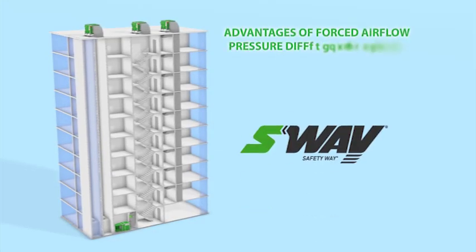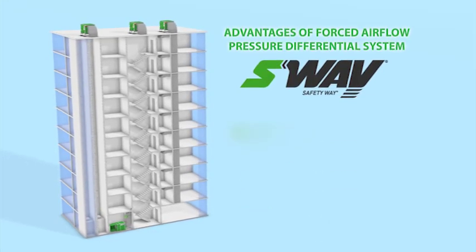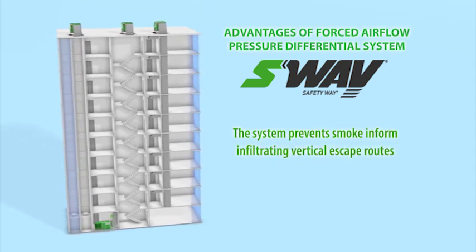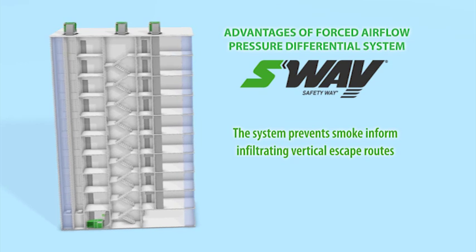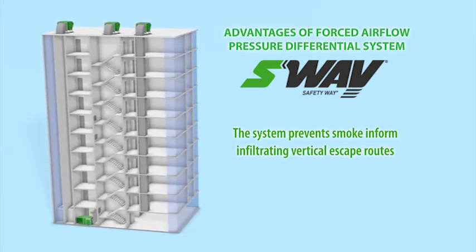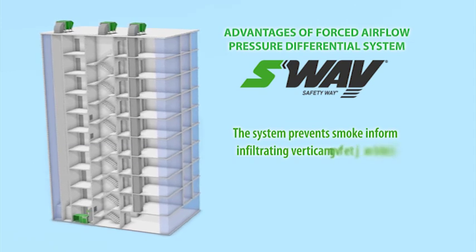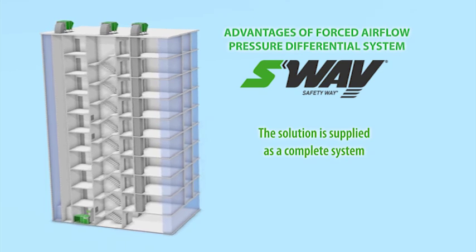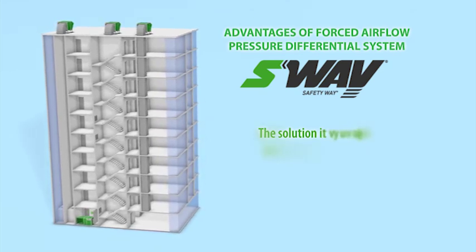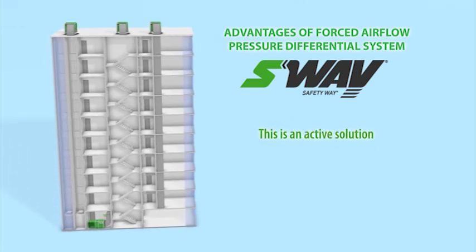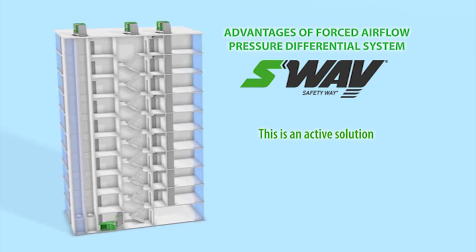Safety Way system advantages: the system prevents smoke infiltrating vertical escape routes in the event of a fire in residential, office and industrial buildings, regardless of how tall they are, the time of year, temperature differences or the wind forces' influence. The solution is supplied as a complete system optimized for use in a given building. This is an active solution, allowing for simple adjustments of settings, monitoring the current operational parameters, as well as automatic adjustment to the rapidly changing parameters such as air temperature or wind.